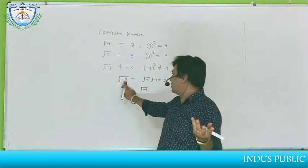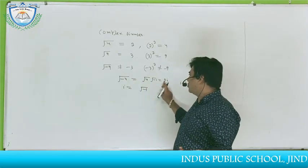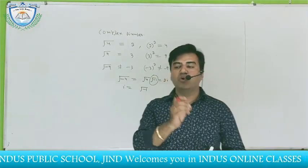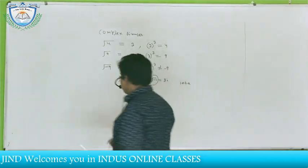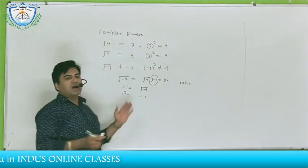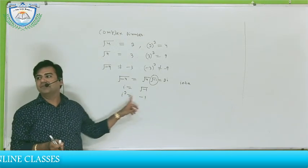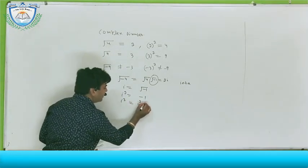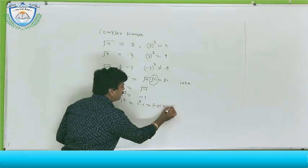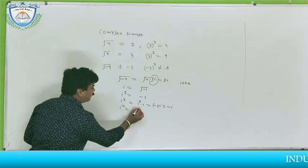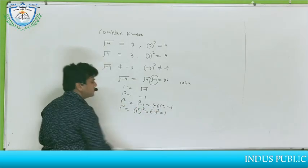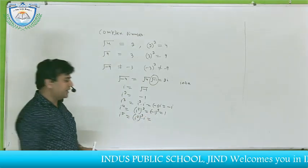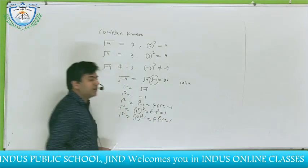Iota is not a real number — the opposite of a real number is an imaginary number. The value of iota equals root minus 1. When we square iota, iota squared equals minus 1 — this is the first number whose square is negative. Similarly, iota cubed equals iota squared times iota, which is minus 1 times iota, giving minus iota. Iota to the power 4 equals iota squared squared, which is minus 1 squared, equal to plus 1.